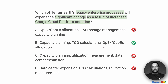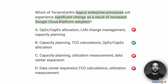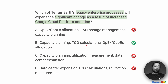However, the right answer according to the practice exam is option B — capacity planning, TCO calculations, and OPEX/CAPEX allocation is apparently the significant change as a result of increased GCP adoption compared to legacy enterprise processes. Like I said, even after knowing the answer, I cannot come up with arguments that corroborate or support this. So honestly, I don't know how to deal with this particular question, and hopefully we won't get questions like this in the exam. But if you've got a different argument that supports option B, I would like to hear it.